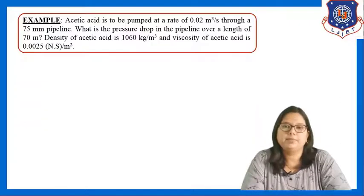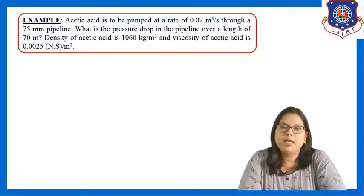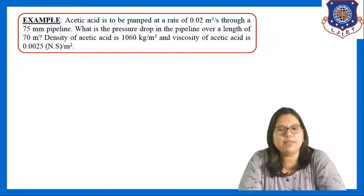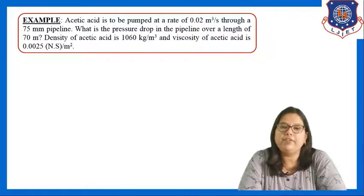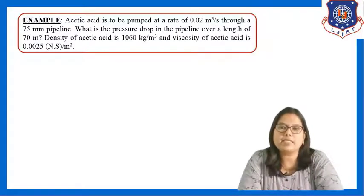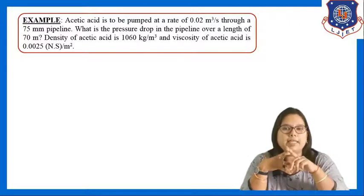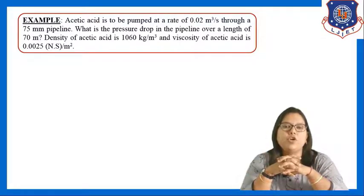Now let us see an example. Acetic acid is to be pumped at a rate of 0.02 m³/s through a 75 mm pipeline. What is the pressure drop in the pipeline over a length of 70 m? Density of acetic acid is 1060 kg/m³ and viscosity is 0.0025 N·s/m². We have to calculate ΔP for a length of 70 m.